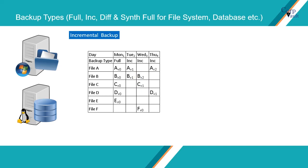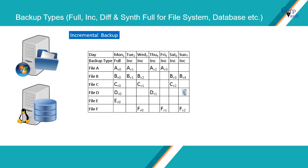The same process continues on all incremental backups made on other days. On Sunday, file D is deleted before the incremental backup is run. The latest version of the file was backed up on Thursday's incremental backup, which can be recovered if needed. If you have noticed, file E did not change, therefore it was not backed up in any of the incremental backups.